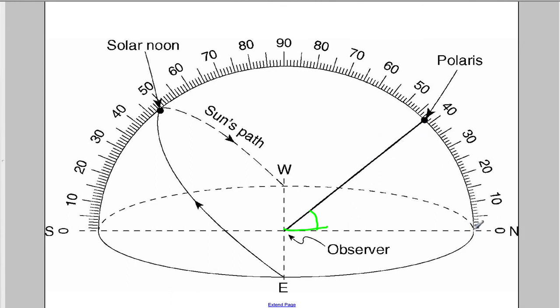So if you see here 0, 10, 20, 30, 42 — if this number here is 42 degrees, you know that the latitude of this observer equals 42 degrees north.